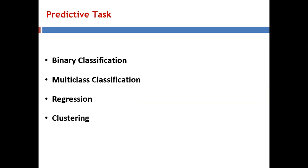Let us now understand the predictive tasks. The first predictive task is binary classification — the task of classifying given instances into two groups based on a classification rule. It is easy to explain and very intuitive. Examples include: deciding whether an email is spam or ham, deciding whether a given person is male or female, and deciding whether a student has passed or failed.